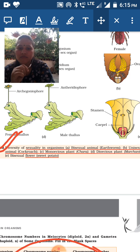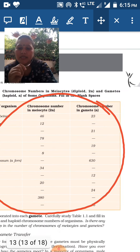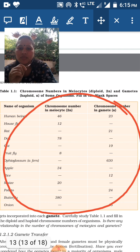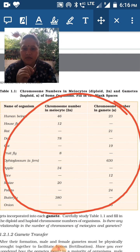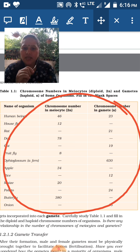Regarding sexuality in organisms from Table 1.1: bisexual animals include earthworm; unisexual animals include cockroach. Monoecious plants and dioecious plants — examples of bisexual flowers include sweet potato. Meiocytes undergo meiotic division, have a diploid set of chromosomes, and gametes have a haploid set of chromosomes.